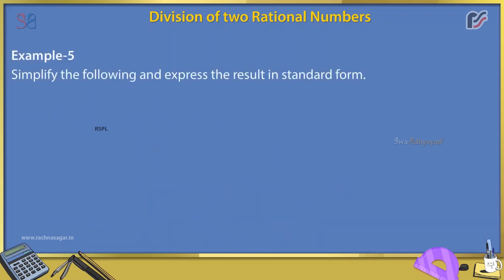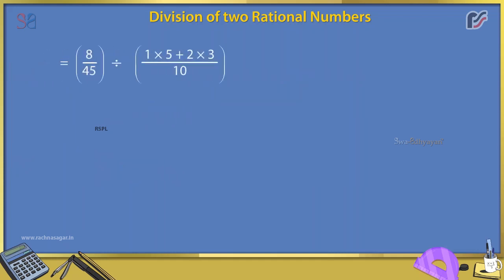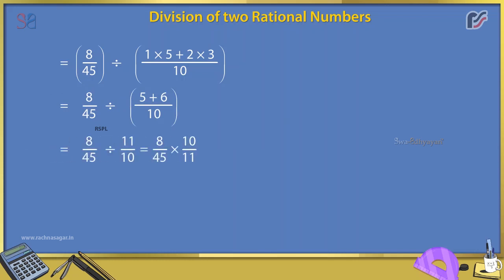Example 5: Simplify and express the result in standard form: (2/5 × 4/9) ÷ (1/2 + 3/5). Solution: (2/5 × 4/9) ÷ (1/2 + 3/5) = (8/45) ÷ ((1 × 5 + 2 × 3)/10) = 8/45 ÷ 11/10 = 8/45 × 10/11 = (8 × 2)/(9 × 11) = 16/99.